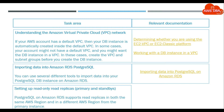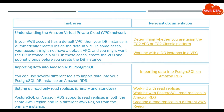Setting up read-only read replicas, primary and standbys. PostgreSQL on Amazon RDS supports read replicas in both the same AWS region and in a different AWS region from the primary instance. See: Working with read replicas, Working with PostgreSQL read replicas in Amazon RDS, and Creating a read replica in a different AWS region.